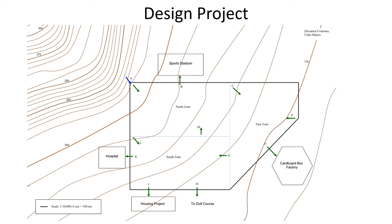What we're designing is a water supply network for a hypothetical development — right now it's just an empty hillside. Let's talk about some of the features on the map. You can see there are contour lines that describe the elevation. Where it says 275, that thick brown line means every place on that line has an elevation of 275 meters.